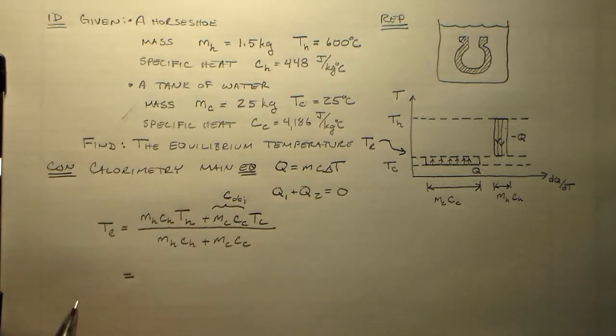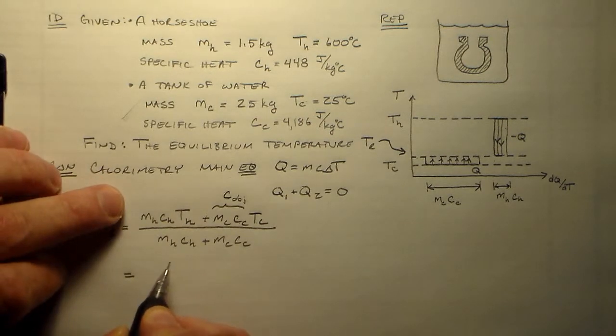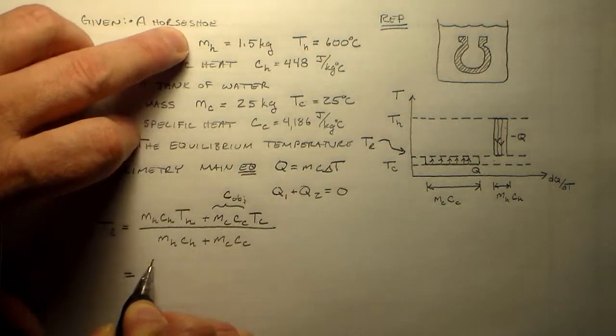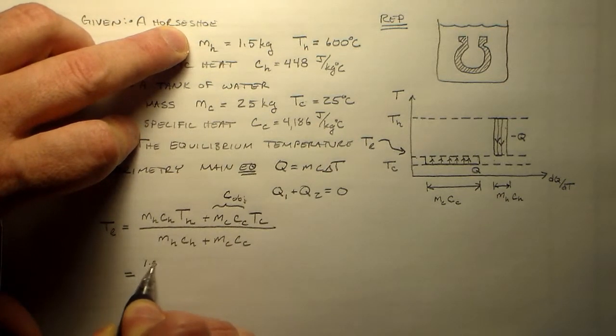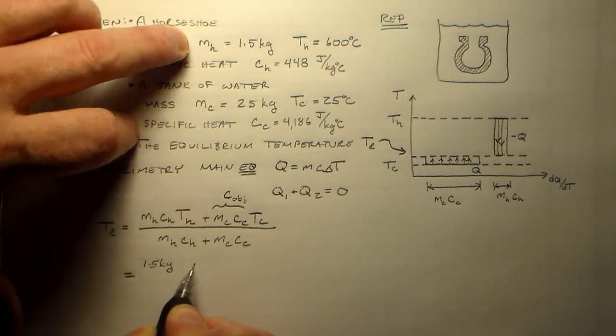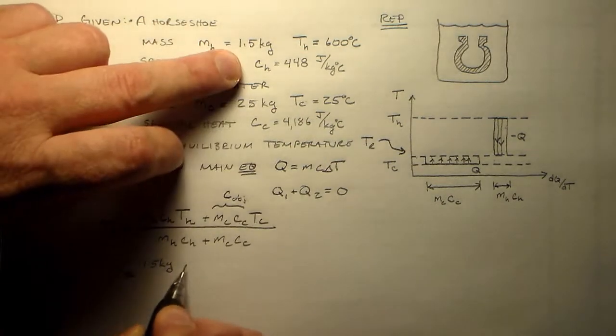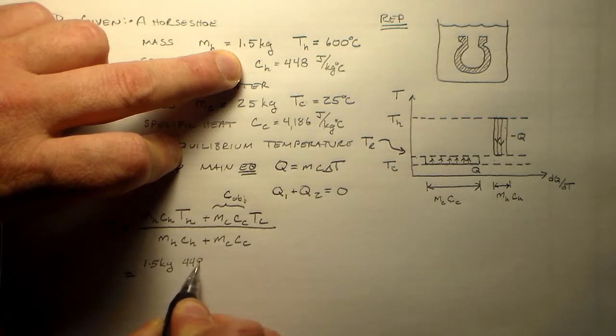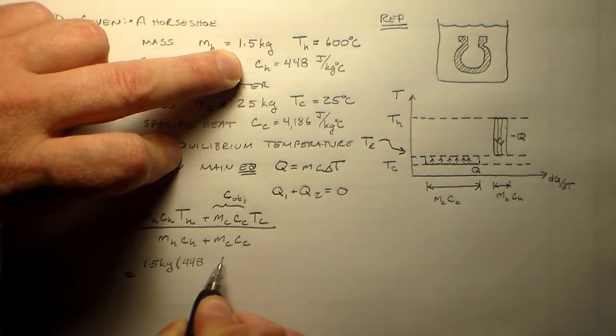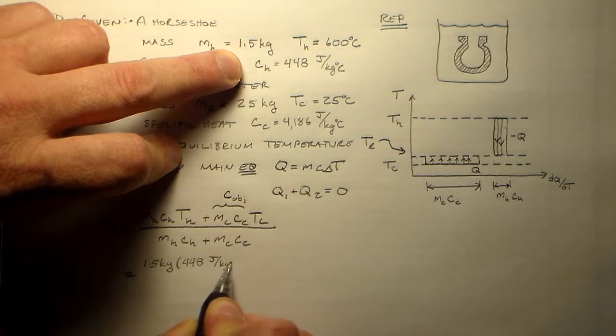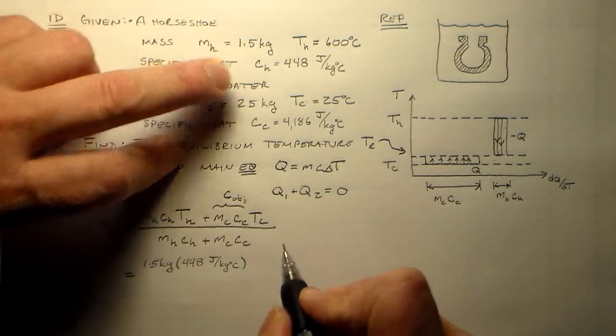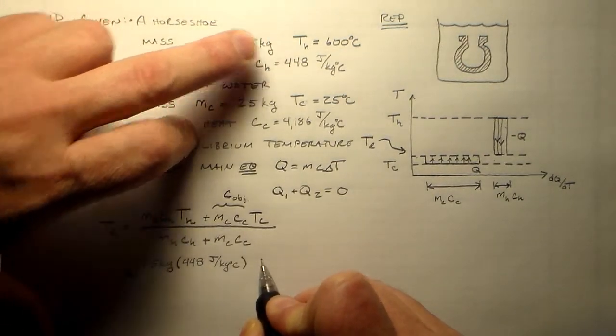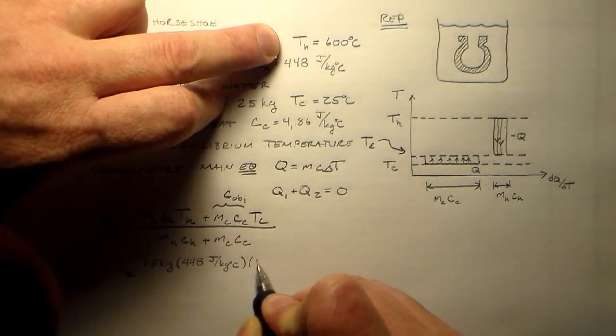All that's left is the boring part. So if you don't see this, it's because I couldn't figure out how to append these and I said, hey, all that's left is the boring part, which is plugging in the numbers. So let's see, what do we have for numbers in here? The mass of the horseshoe is 1.5 kilograms. The specific heat of the horseshoe is 448 joules per kilogram per degree centigrade.